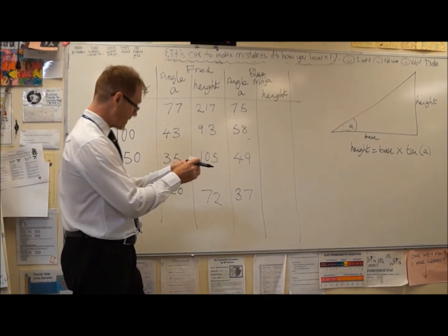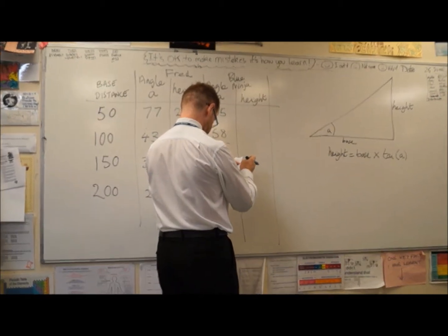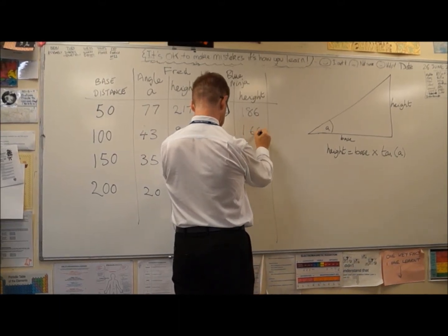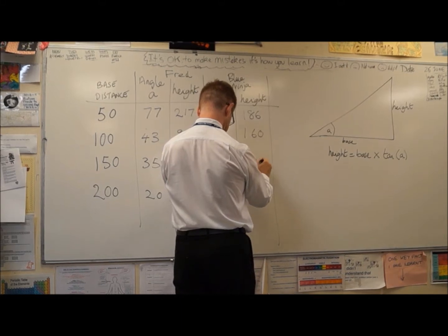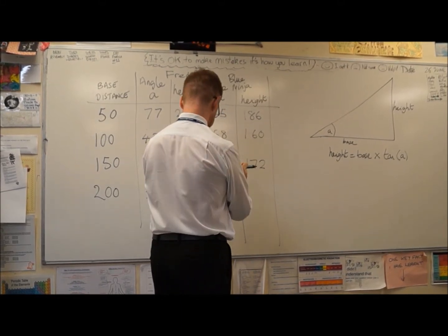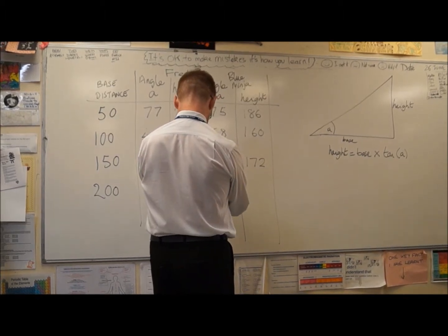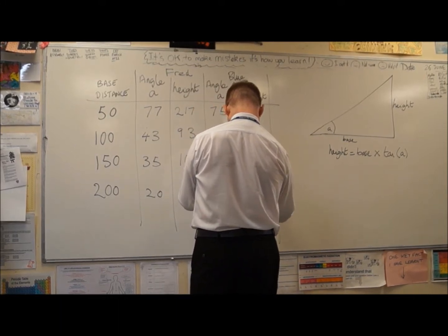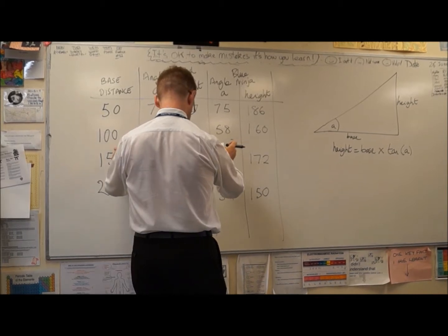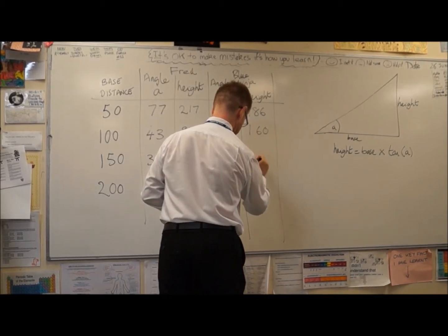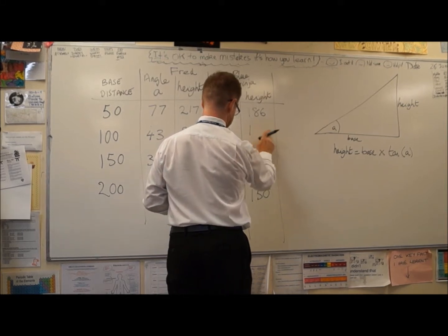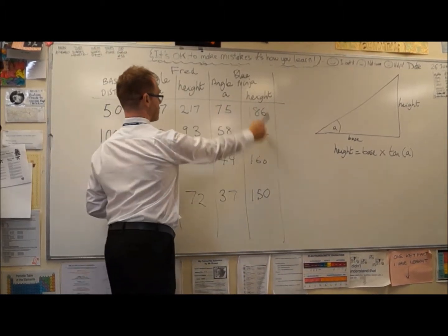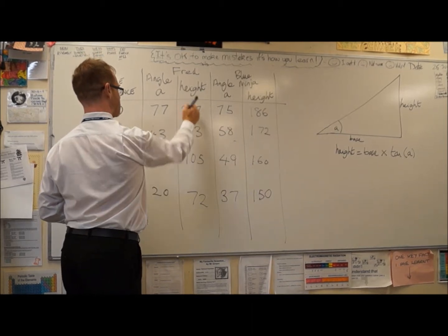And then for Blue Ninja, we've got 186 metres, we've got 160 metres, we've got 172 metres, we've got 150 metres. I need to swap those round. And 160. Those are falling, and so we've got some falling here.